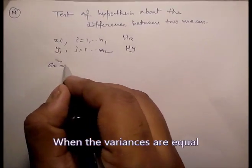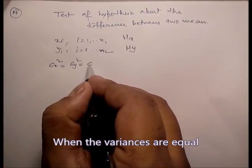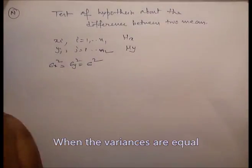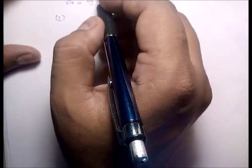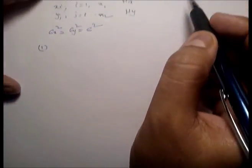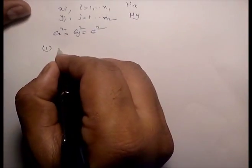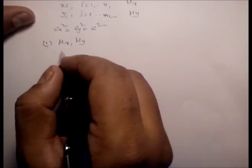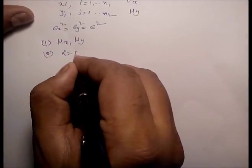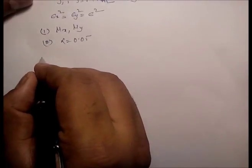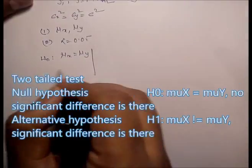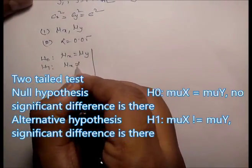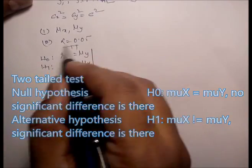Under the assumption that the population variances are equal — that is, sigma_x squared equals sigma_y squared equals sigma squared — the parameter of interest is the difference between two means, mu_x and mu_y. The level of significance is 0.05. For the null hypothesis mu_x equals mu_y and alternative mu_x not equal to mu_y, we use a two-tail test.